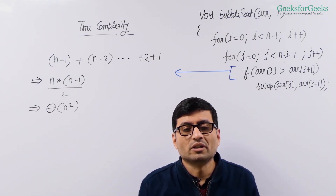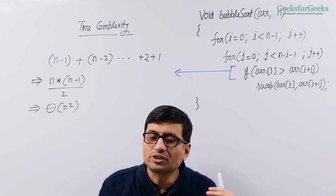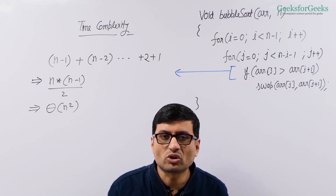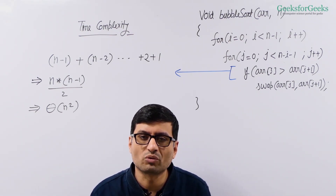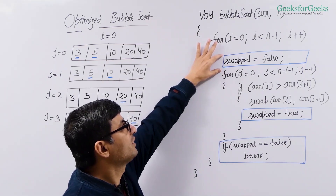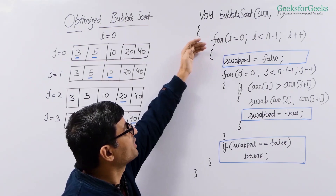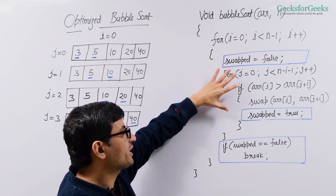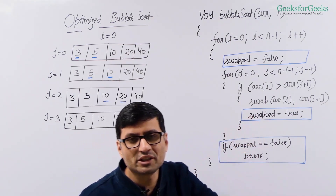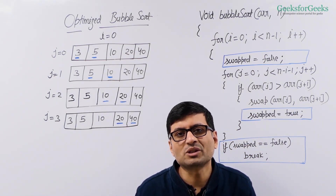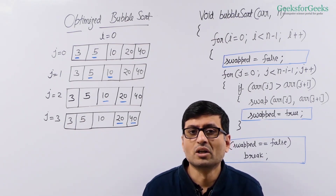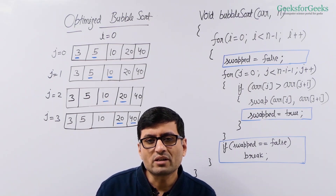Can we optimize the solution, especially for the cases when the array is already sorted? This particular implementation always takes n squared time. We can optimize it so that if the array is sorted, or if it becomes sorted in the middle, it does not do any more work. In the optimized implementation, we maintain a swapped variable. We initialize it as false after every pass, and for the current pass we check if any swapping happened. If swapping occurred, we set swapped to true. If swapped remains false, it means no swapping happened — we did not find any pair of elements out of order — which means the array is already sorted. So we need not proceed further and can break the loop.